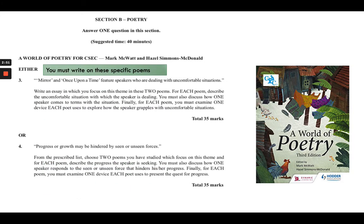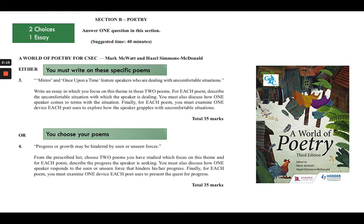Questions three and four are slightly different. In Question 3, you are given two specific poems to consider — for example, this question wants you to focus on 'Mirror' and 'Once Upon a Time.' Please don't try to show off your knowledge about a different poem, because your marker will not be impressed. In Question 4, you are given a statement or a theme to consider, and here you are able to choose two out of the 20 poems you have studied. To reiterate: you have two choices, you write one essay, and you must choose one from this section.